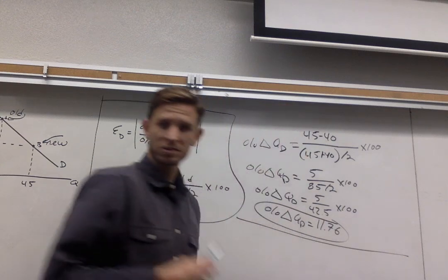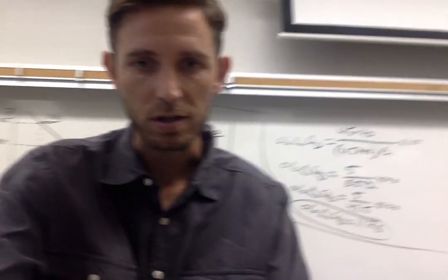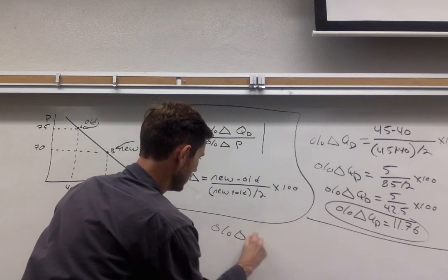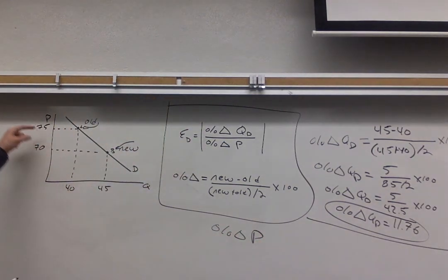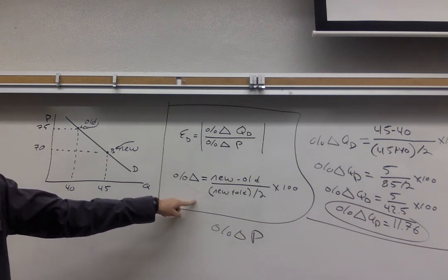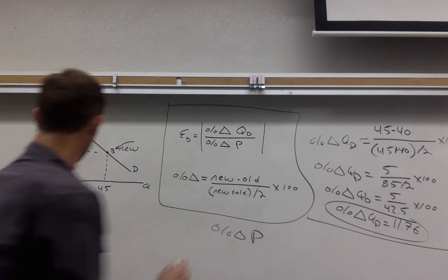We've got to do the same thing now. Same exact calculation, but now we want to look at the price numbers. So for percentage change in price, again we'll refer to our graph. Now we're considering the 75 and the 70 while ignoring the quantities. Other than that it's the same exact technique. So we'll go a little quicker on this one.